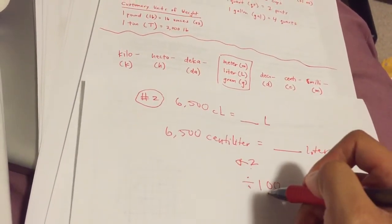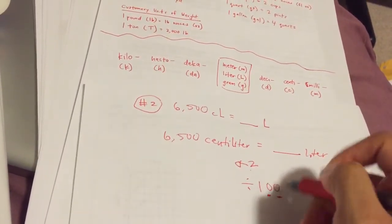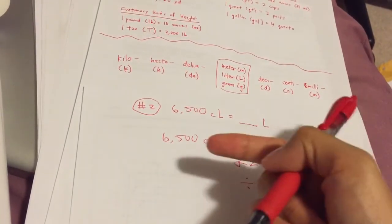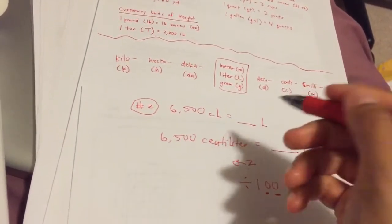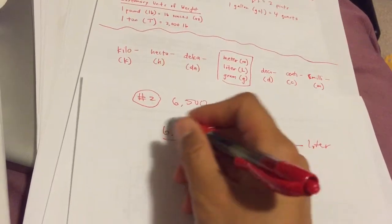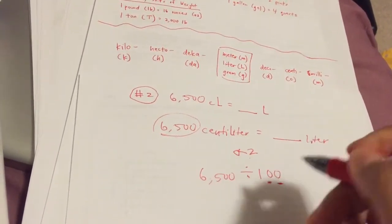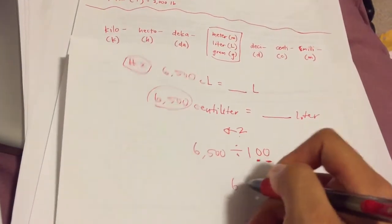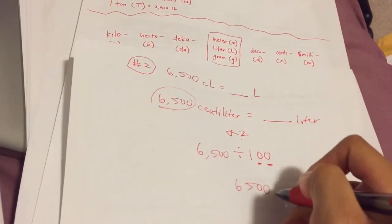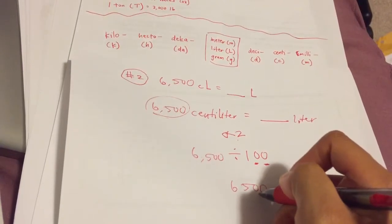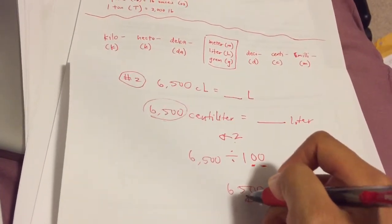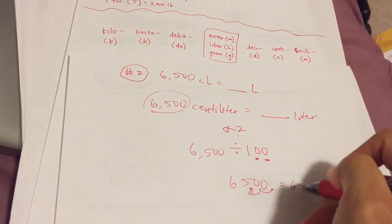We get this two because we're shifting over two place values and going to the left, so we're dividing. Right would be multiplying. Our equation is 6,500 divided by 100. The decimal is right here. Move it two times to the left because we're dividing, and it's 65.